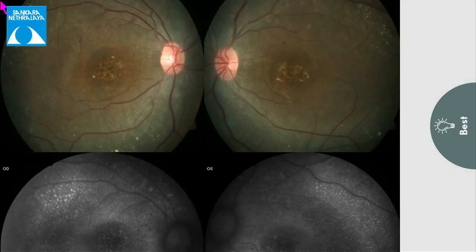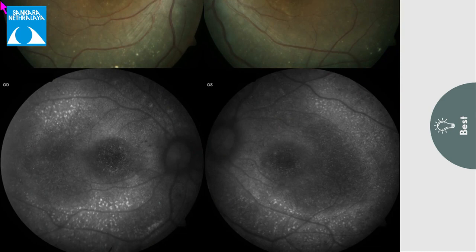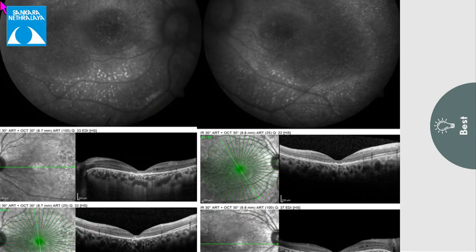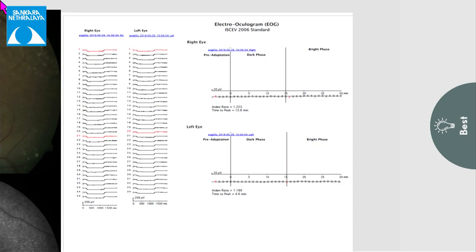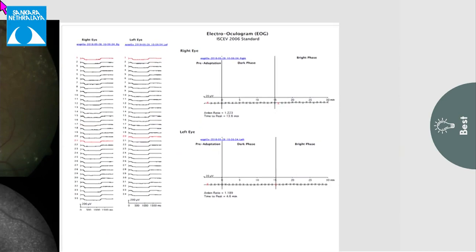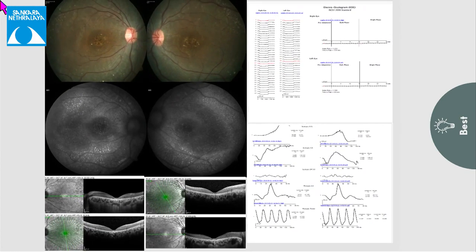A 26-year-old lady presented with moderate visual impairment. On fundus examination she showed multiple yellow subretinal deposits and foveal thinning with RPE alterations. On fundus autofluorescence, there were multiple hyperautofluorescent deposits. On OCT, there was foveal thinning with inner layer schisis. ERG was normal, and EOG showed a reduced Arden's ratio, so a diagnosis of autosomal recessive bestrophinopathy was made.